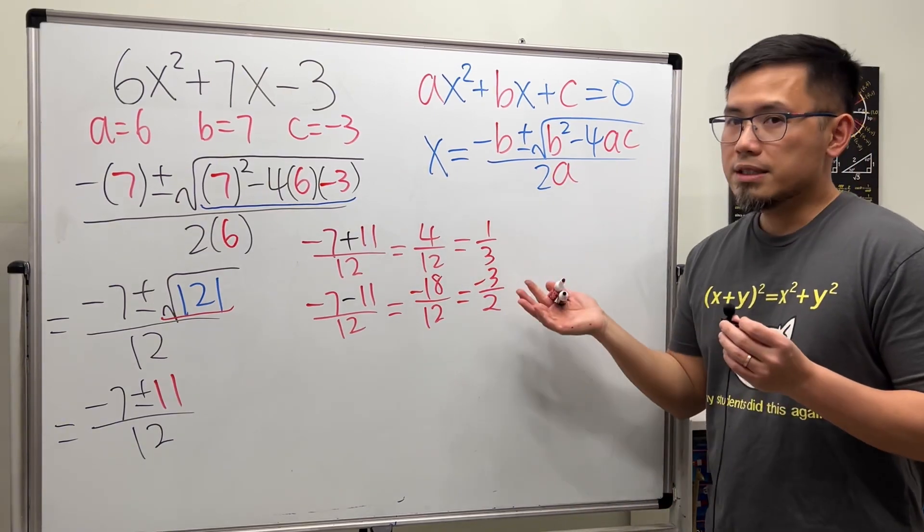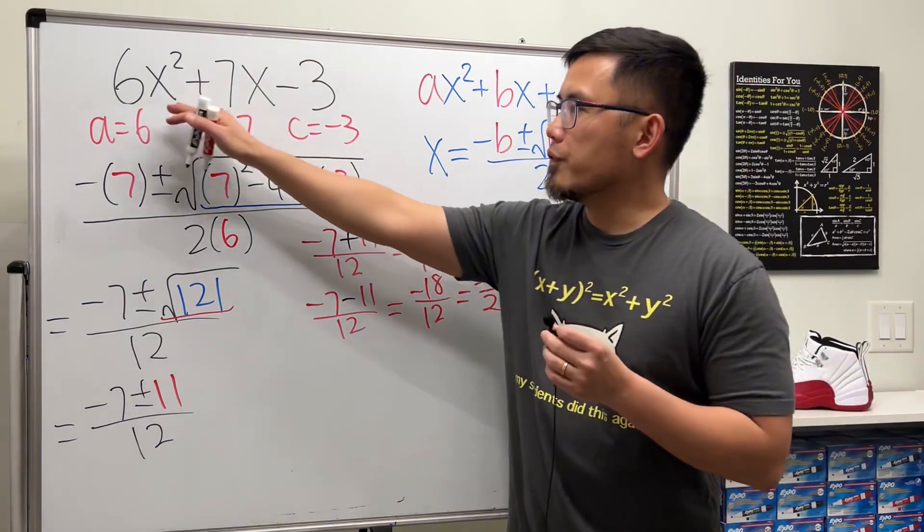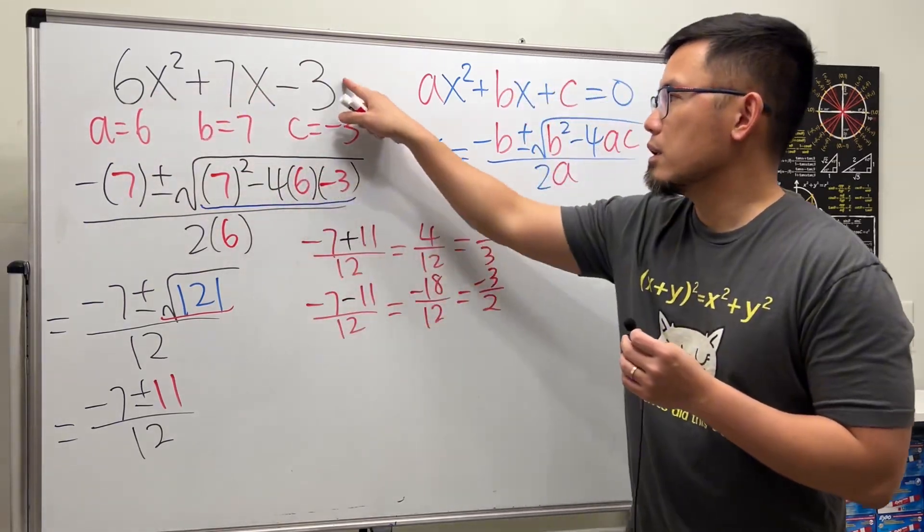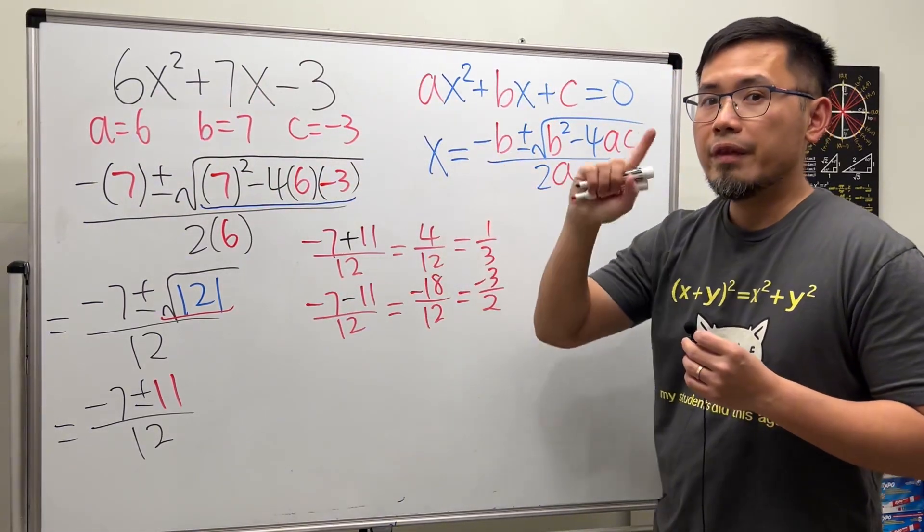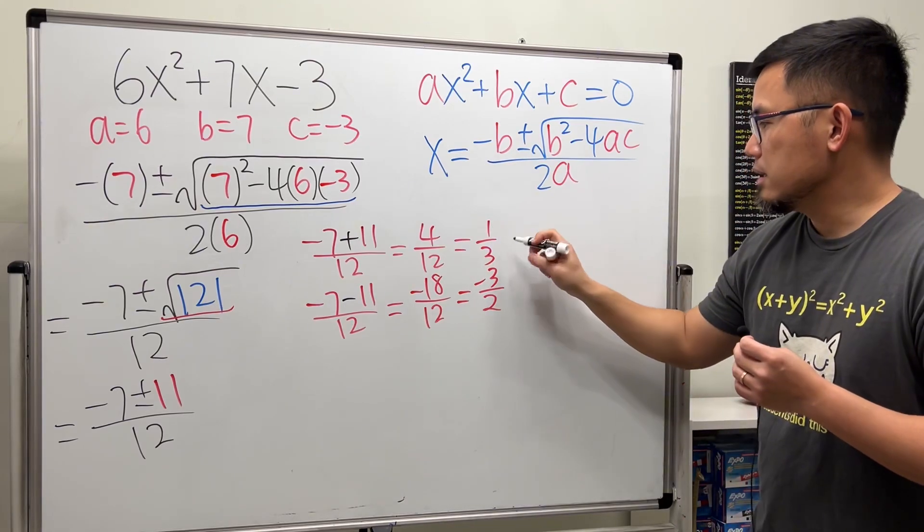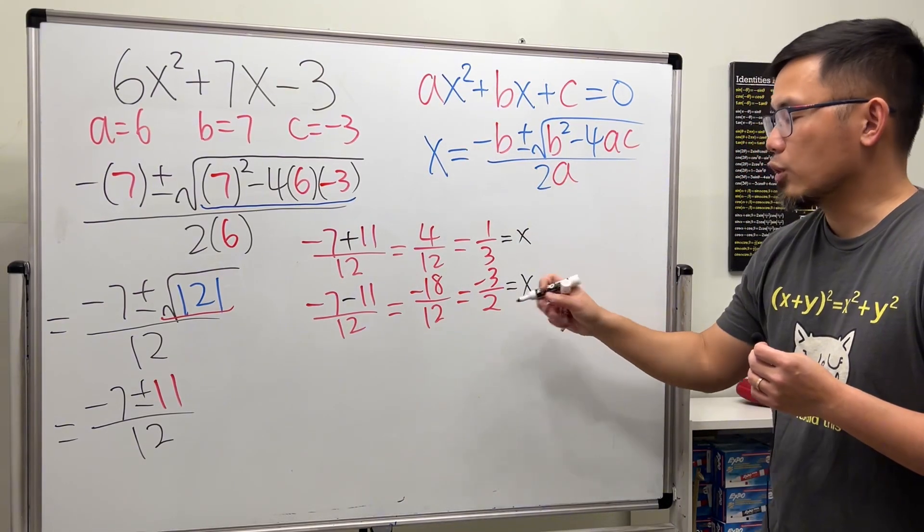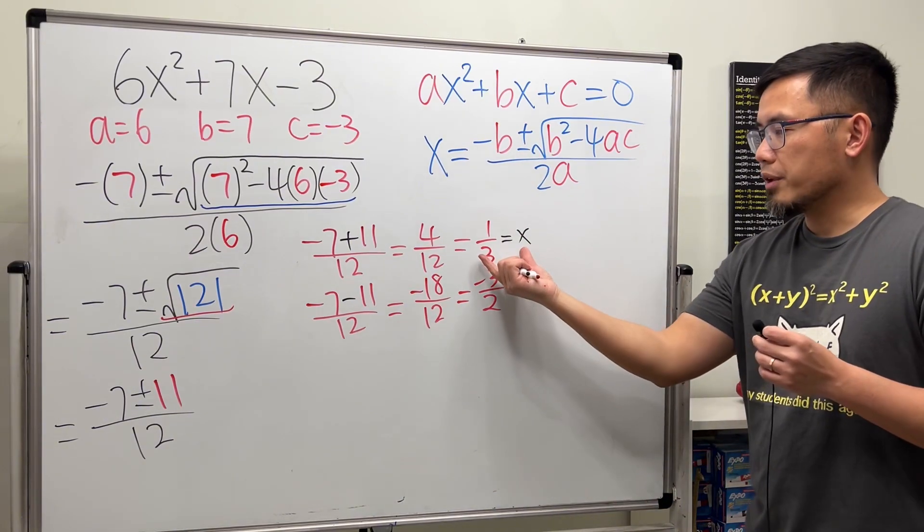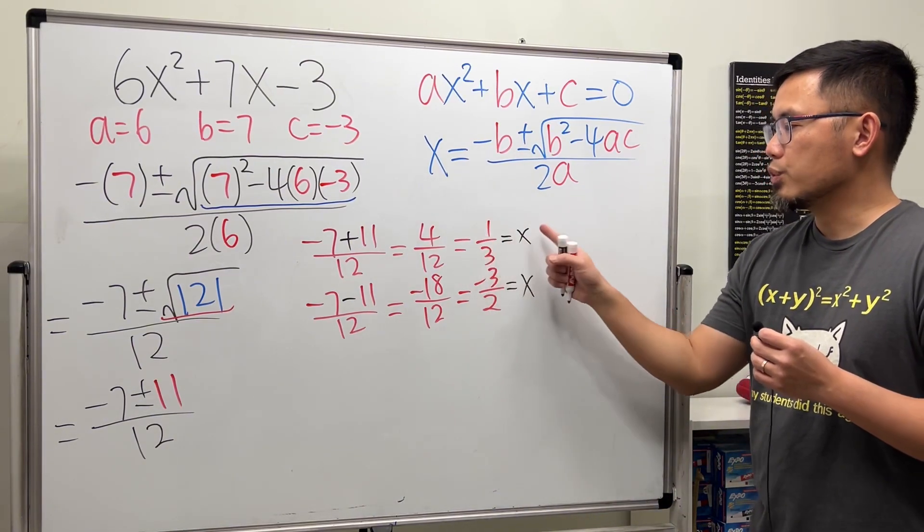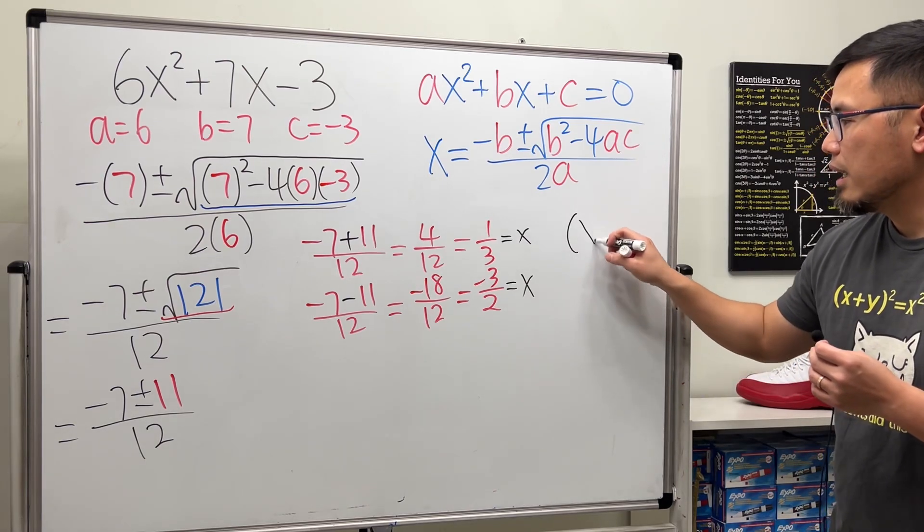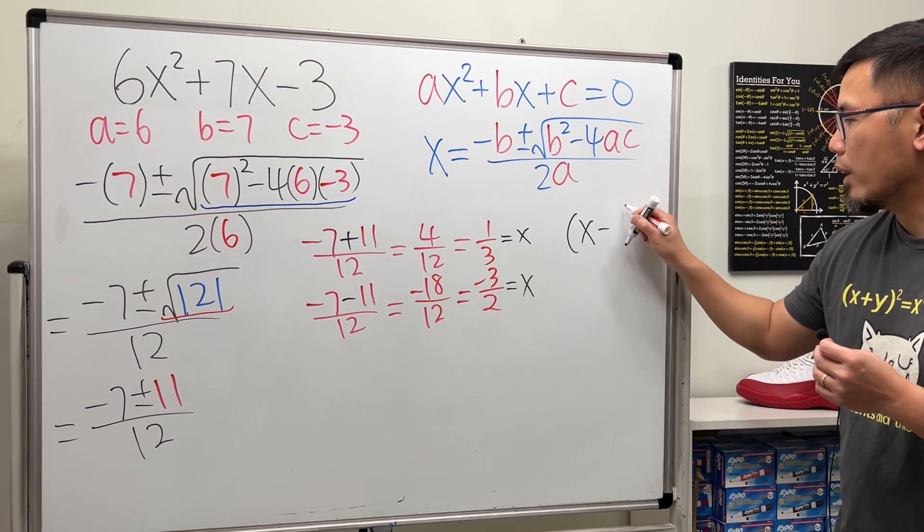So what exactly does this mean though? If we were solving a quadratic equation, if this was equal to 0, then we know this is an x value that will make that true. And this will be an x value that will make that true. So if you look at this right here, we can move the 1 third to the other side and get a factor x minus 1 over 3.